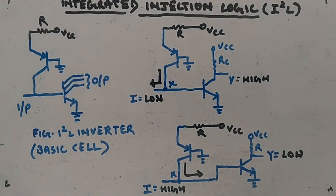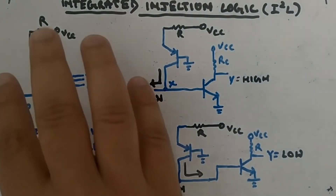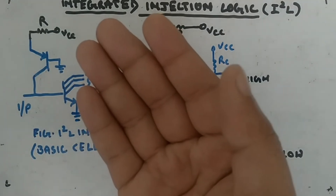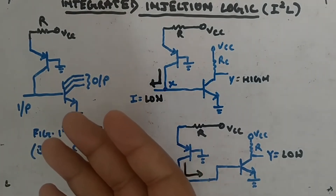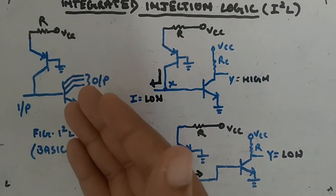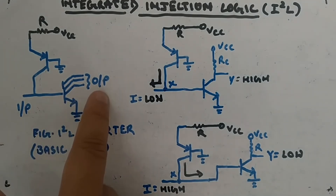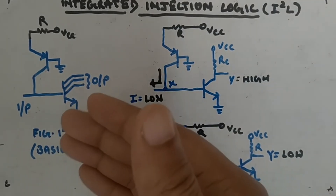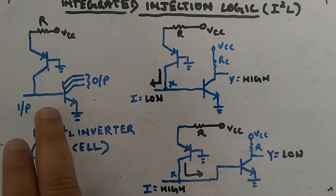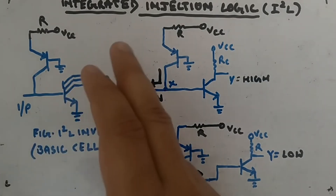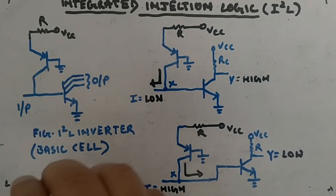Let's look at the Integrated Injection Logic circuit, which we have seen before. This is the basic cell — from this one you derive other gates. We saw DCTL, whose problem was current hogging, and from that we saw how this circuit was made. Now I am giving you the analysis of how it is working. From here you give the input, and here you take the output — there are three outputs, meaning three transistors in parallel with the same base and emitter. This is called an I²L inverter — I² means integrated injection and L means logic.